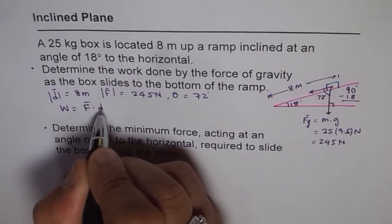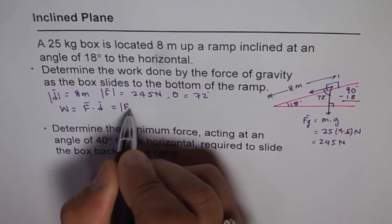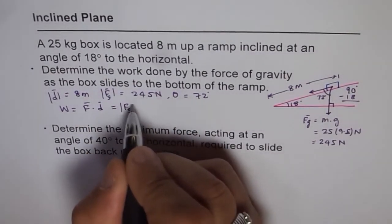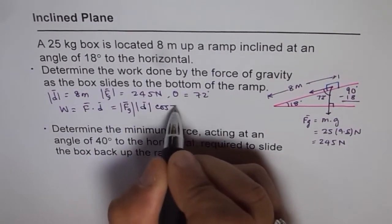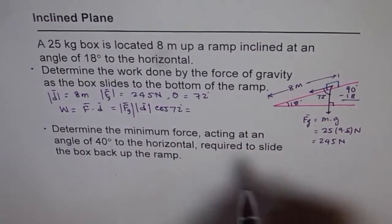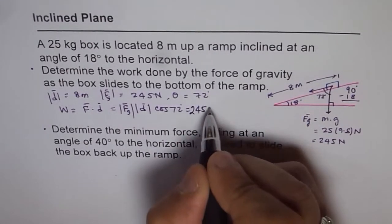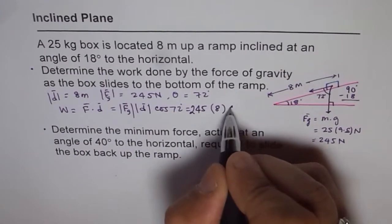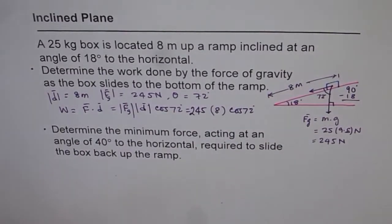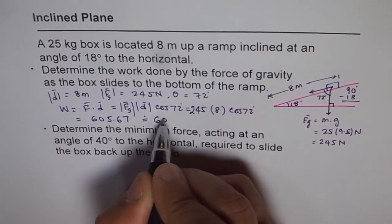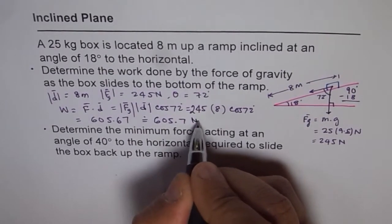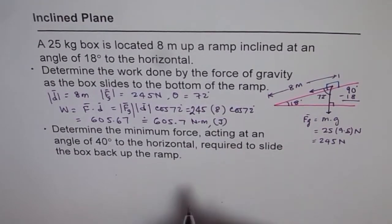Work done is the dot product of force and displacement. So it is the magnitude of the gravitational force times displacement times cosine of 72 degrees. We have 245 times 8 times cos of 72 degrees. Calculating this gives work done equal to 605.67, which we can approximate as 605.7 joules.